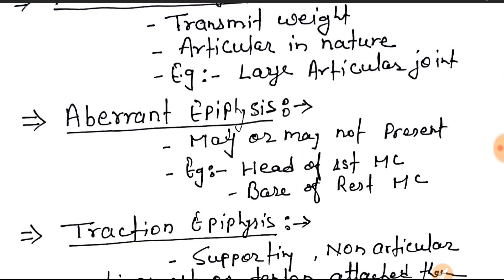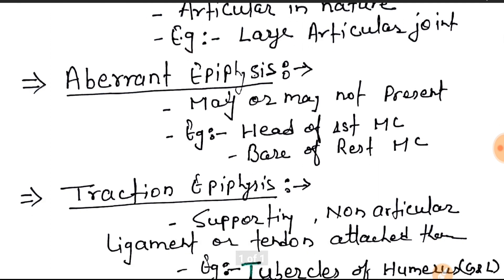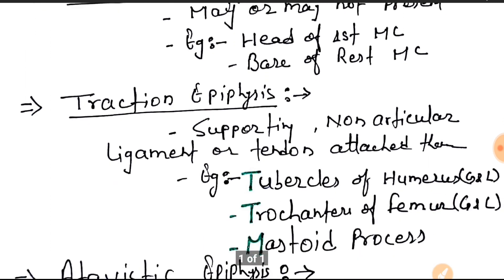You can remember that it may be present or not present. This is the aberrant epiphysis. Example is the head of the first metacarpal and base of the wrist metacarpal — that means first and wrist. You can remember that.